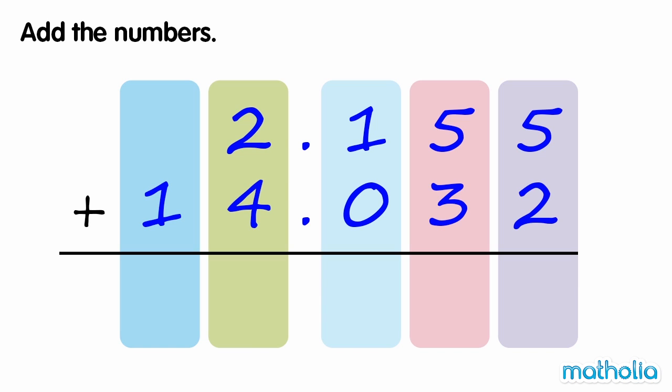Add the numbers. We need to find 2.155 plus 14.032. 5 thousandths plus 2 thousandths equals 7 thousandths. 5 hundredths plus 3 hundredths equals 8 hundredths. 1 tenth plus 0 tenths equals 1 tenth.